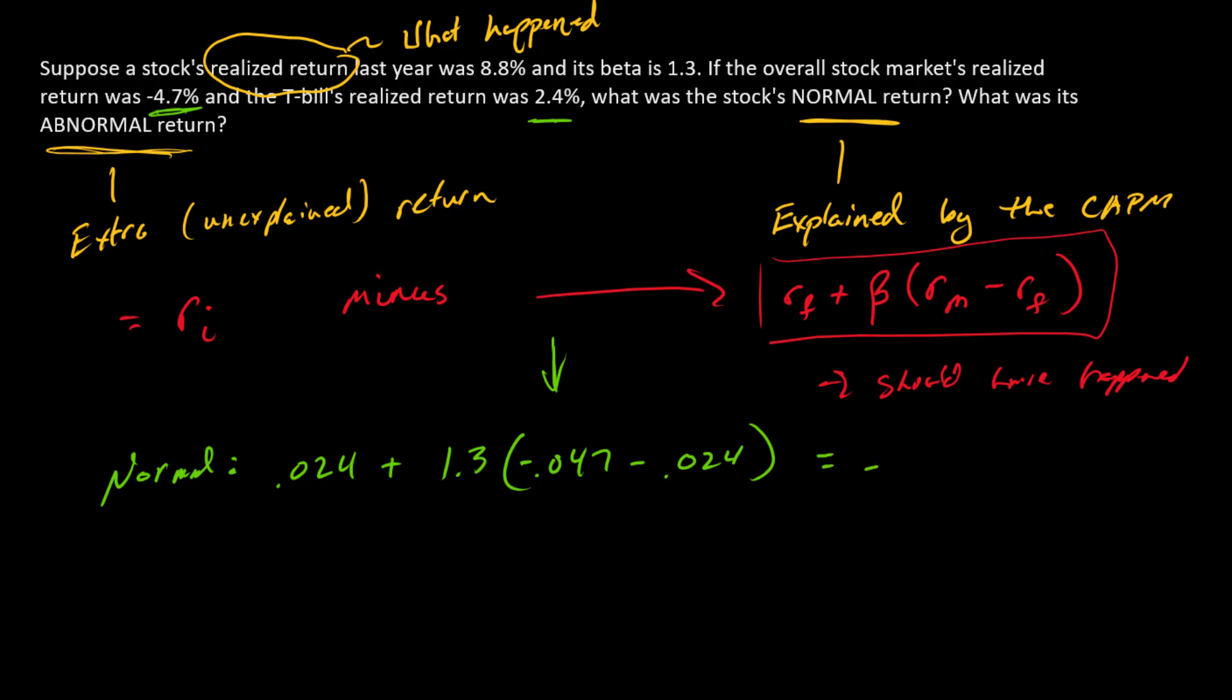So the part of the return that's explained by the market would be negative 0.0683, right? Since the market was down, we could explain a big negative movement in the stock. But what happened with the stock?